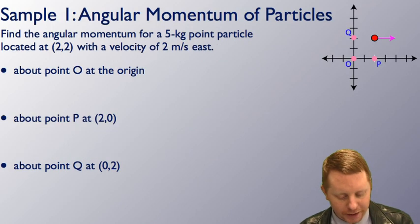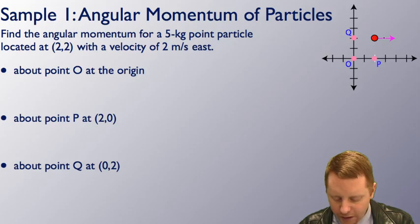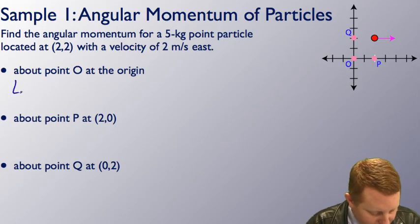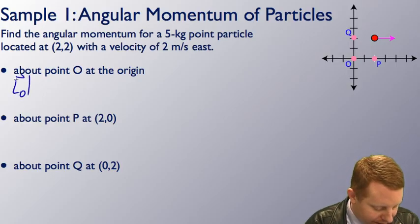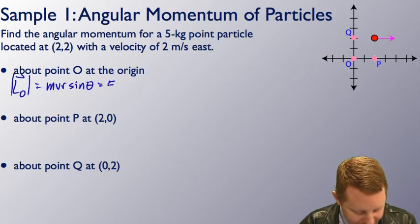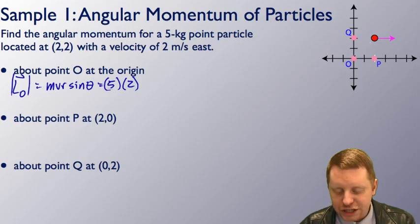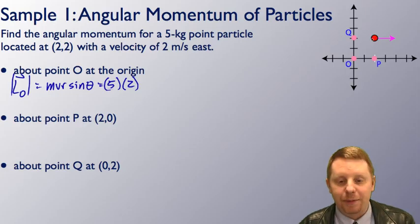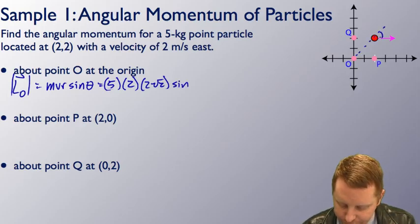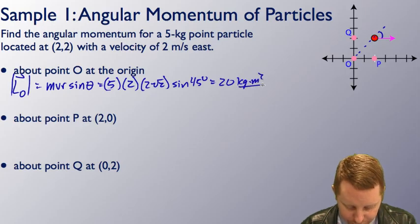Let's take a look at a sample problem calculating angular momentum. We'll find the angular momentum for a five kilogram point particle located at (2, 2), with a velocity of two meters per second to the east. Starting with the angular momentum about point O, the magnitude is MVR sine theta, where mass is five kilograms, velocity is two meters per second east, and the radius — the position vector's magnitude from zero to (2,2) — is two square root of two by the Pythagorean theorem. The angle is 45 degrees, so sine theta is square root of two over two, which gives 20 kilogram meters squared per second.